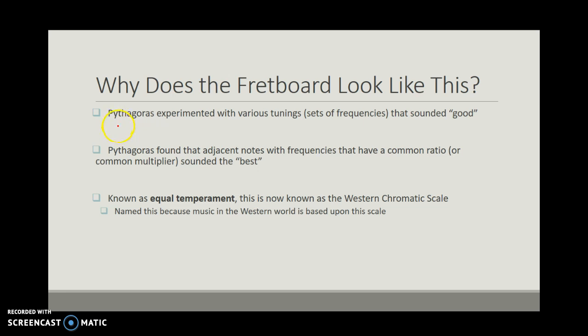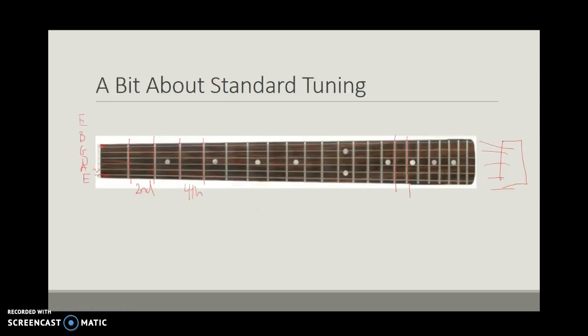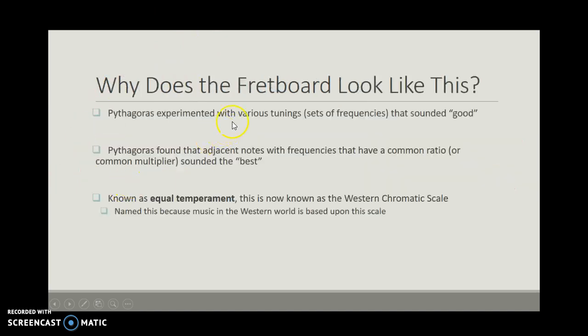Pythagoras, that's right, the guy after whom we know the Pythagorean theorem, a squared plus b squared equals c squared for right triangles, among many other things, he actually was experimenting with sound way back in that day. He experimented with various tunings, and tunings are really sets of frequencies. This is a particular tuning called the standard tuning, and that's just a set of frequencies, so that when two people pick up the guitar and they're both tuned the same way, they can play the same chords and they'll sound exactly the same.